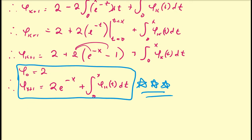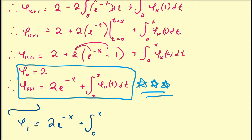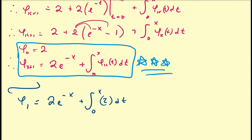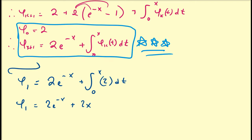Let's compute φ₁. φ₁ equals 2e^{-x} plus the integral from 0 to x of φ₀(t) dt. Since φ₀ equals 2, that integral is just 2 with respect to t. Integrating 2 from 0 to x gives 2x. So φ₁ equals 2e^{-x} plus 2x.